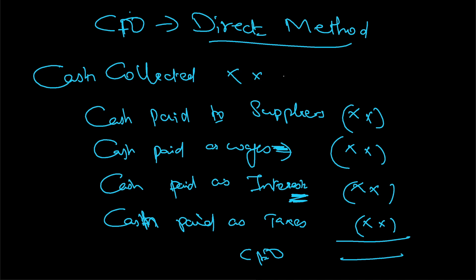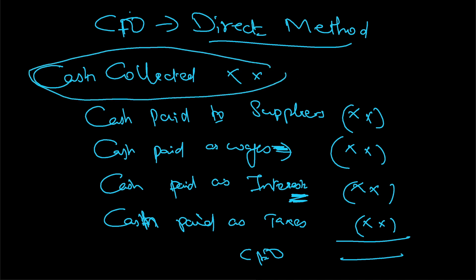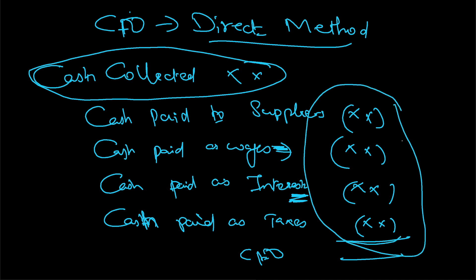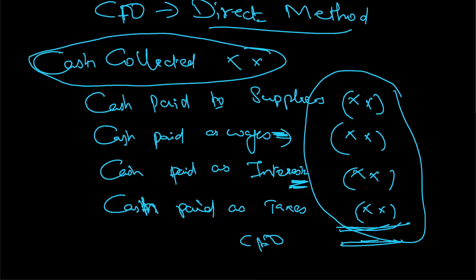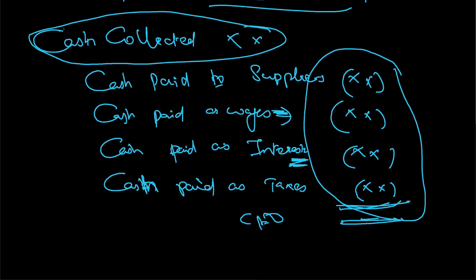So using the direct method, from total cash collected we are reducing all these expenses, and the net amount we get is cash flow from operations. Now the question is: how do I calculate cash collected? That's what I'm going to explain now.